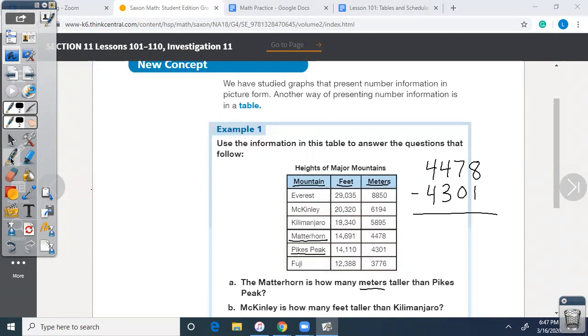Mount Everest is 29,035 feet. I found that information by looking at Matterhorn and then going across to figure out how many meters it was. Then I looked at Pikes Peak and went across to figure out how tall it is in meters. So we're going to subtract to find how many meters taller Matterhorn is than Pikes Peak.